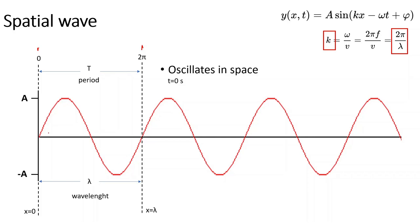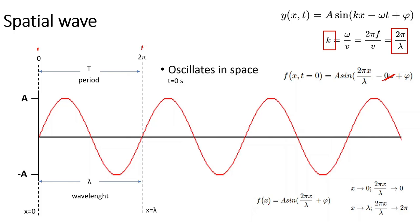Now let's assume we freeze this wave at time zero — it's not propagating, just standing in place. We can omit the time term, and the equation simplifies to amplitude times sine of k times x, since k equals 2π over lambda. The image shows zero phase shift, so this is a true sine wave with phase shift equal to zero.